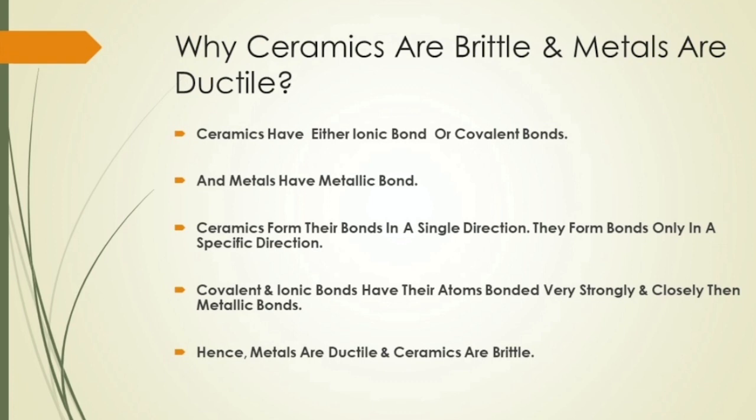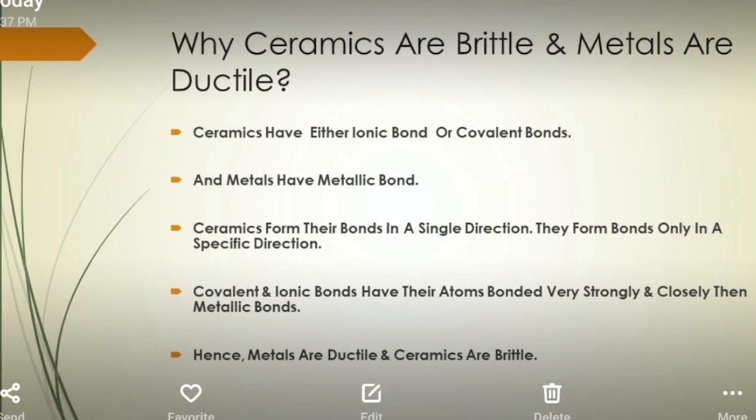Ceramics ke liye jo common chemical bonds hain woh either ionic bond hain ya covalent bond hain, aur metals ke liye metallic bond hai. Jo bonding hoti hai atoms ki, woh covalent aur ionic bonding mein zyada stronger hoti hai metallic bonding se.